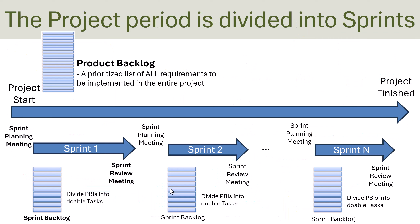Basically in Scrum, the project is divided into smaller parts called sprints. You have the project start, the project finish, and the entire project is divided into sprint one, sprint two, sprint three, and so on until the project is finished. The product backlog is a list of all requirements to be implemented from start to finish, but in each sprint they take just a part of the product backlog — called the sprint backlog — and work on those items.